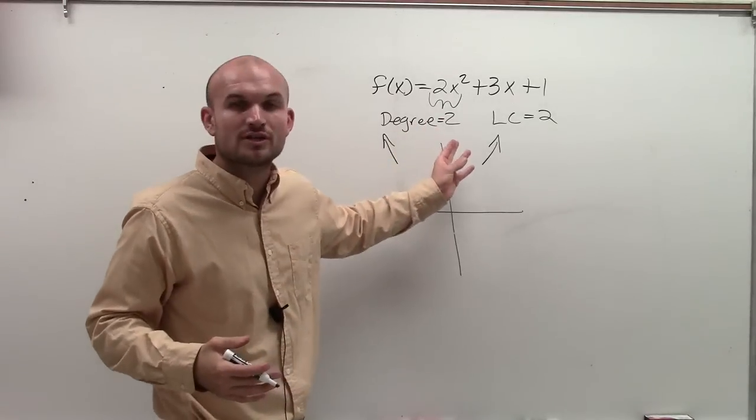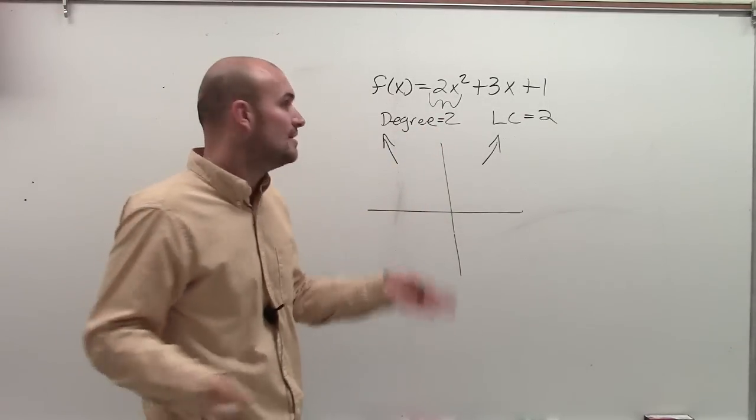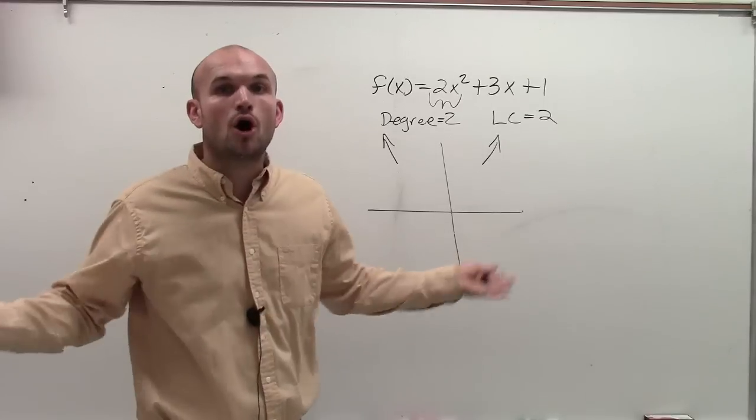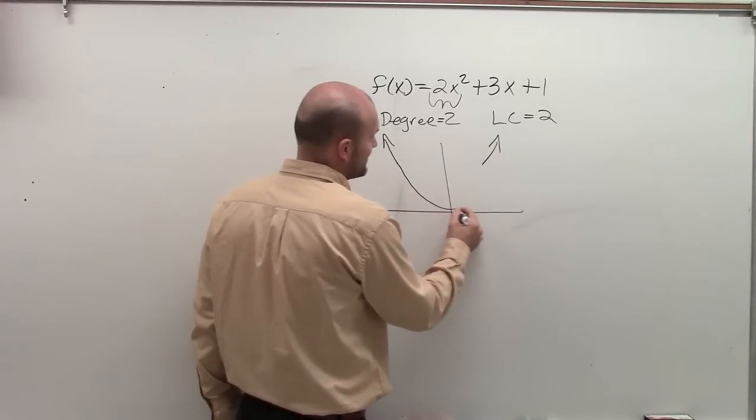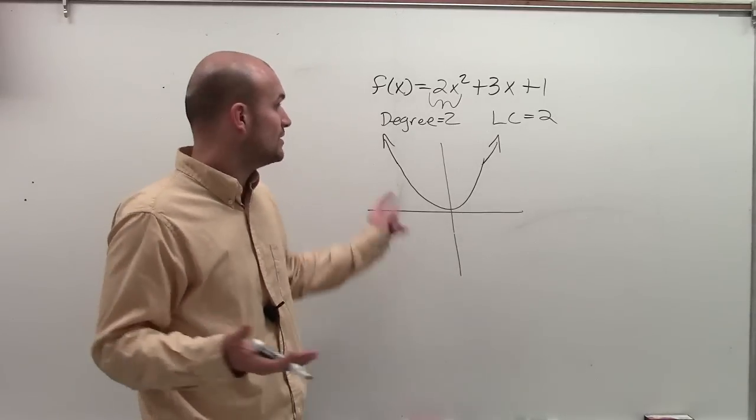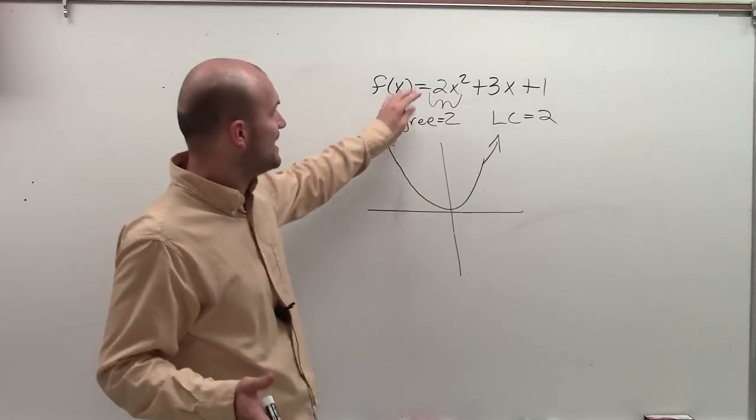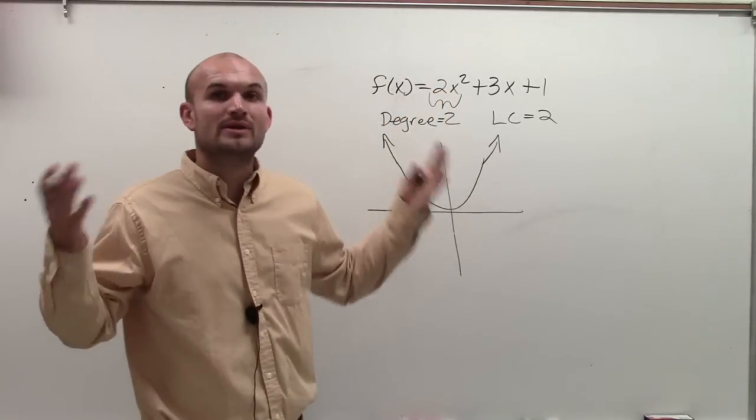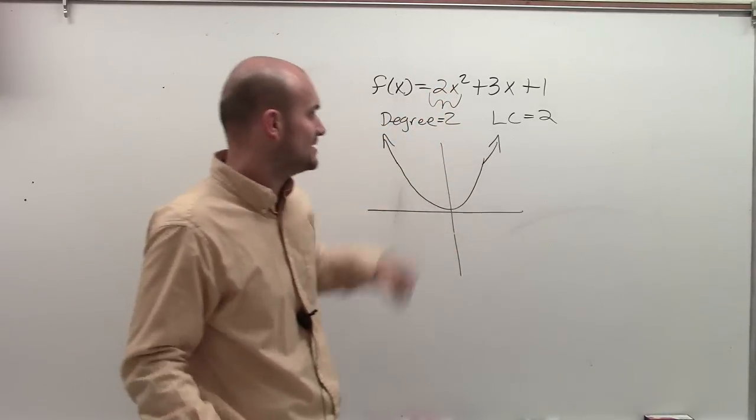Now, for a degree 2, we know it's going to be a parabola. However, this works for all even degrees. So there really could be a lot of things going on with our graph that we don't know about. But if it has these characteristics, we know that the end behavior is going to be the same.